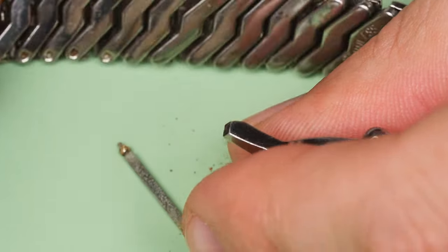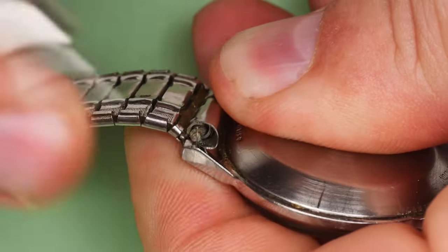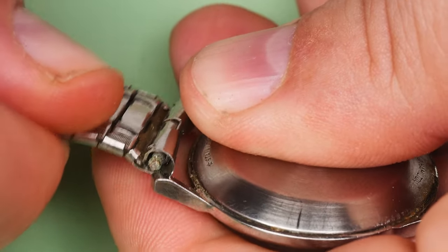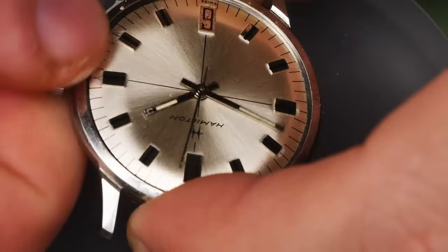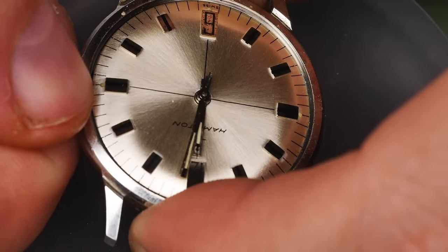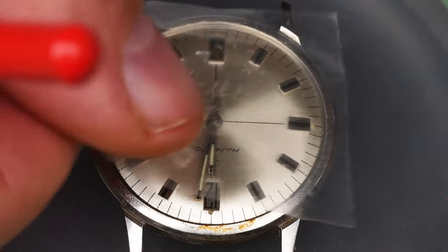This is a monocoque case, meaning it is one solid piece of stainless steel. To remove the crystal, I use a tool officially called a crystal lift, but I refer to it as the claw in my head every time I use it. The silver arms of the claw squeeze the acrylic crystal uniformly across the circumference so I can lift it out of the case.